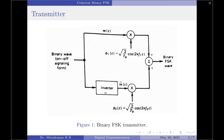We will be using an inverter in the lower channel to ensure that when we have to transmit symbol one, the oscillator with frequency f1 in the upper path is switched on while the oscillator with frequency f2 in the lower channel is switched off, resulting in the carrier with frequency f1 being transmitted. Conversely, when we have symbol zero at the input, the upper channel oscillator is switched off and the lower channel oscillator is switched on because of the inverter, so the carrier with frequency f2 is transmitted.